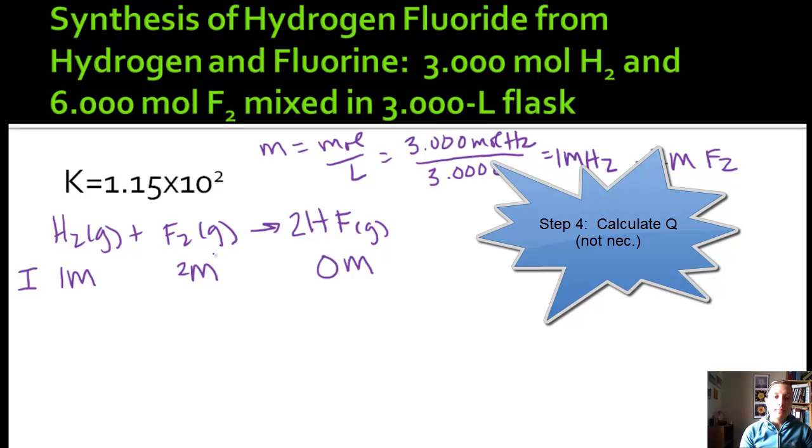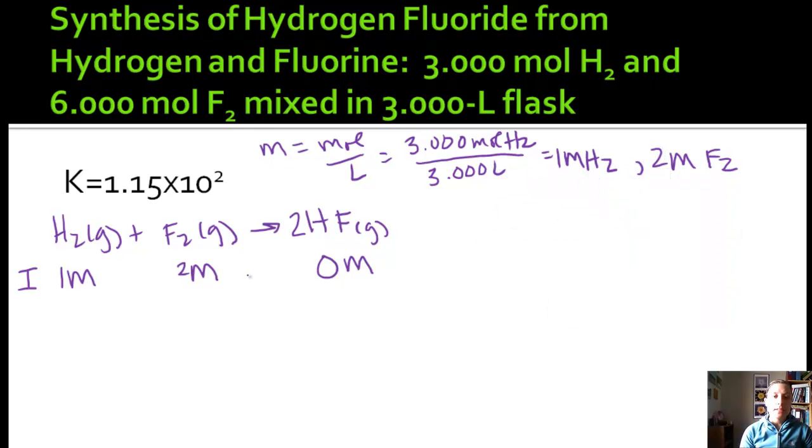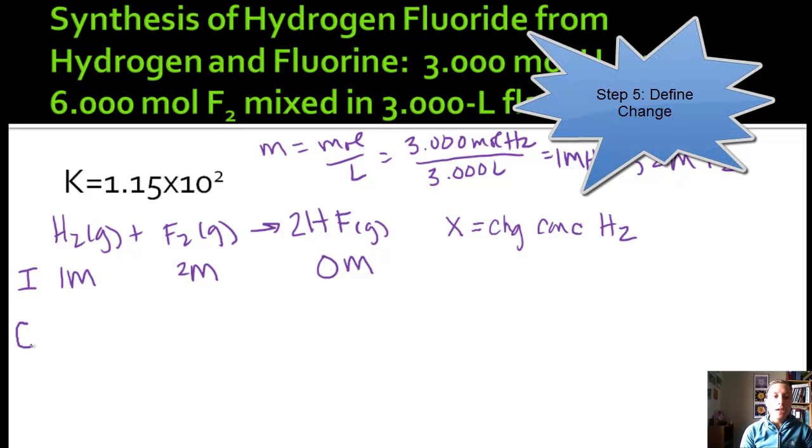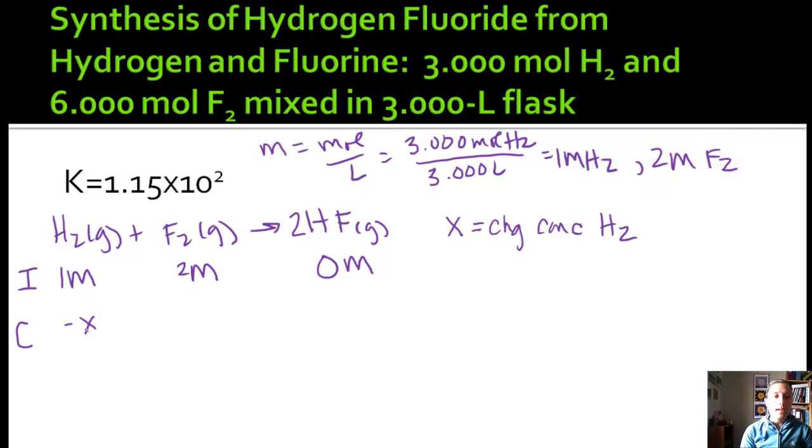So what's different about this problem from 10.5 is that we aren't given any equilibrium concentrations. And so we're going to assign a variable. We're going to say X, and we're going to say that that is equal to the change in concentration of H2. So for our change, because this is a reactant and we know we're shifting to the right, this is minus X. This is minus X. And this is plus 2X. And the two is coming from the balanced chemical equation.